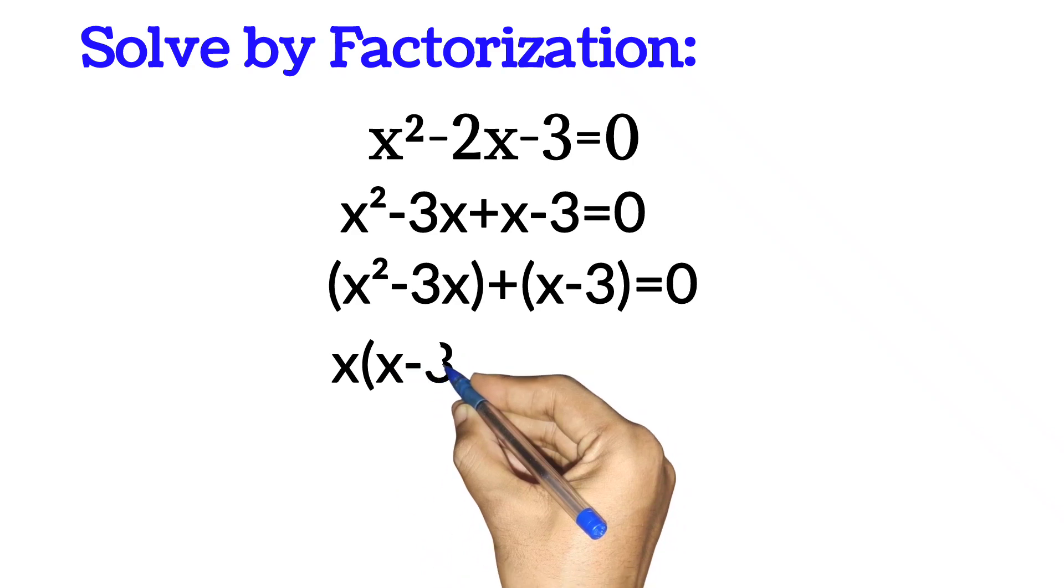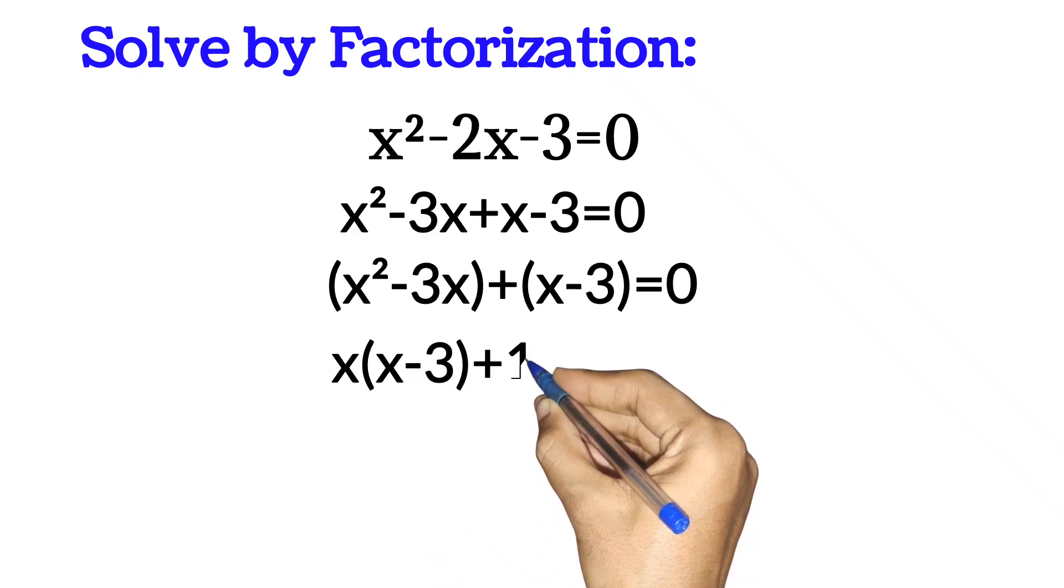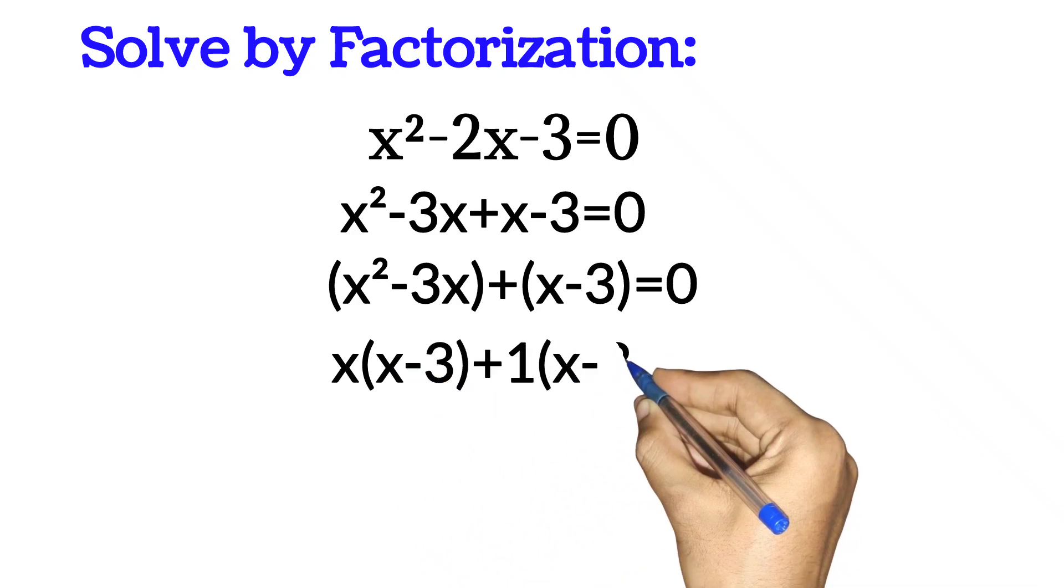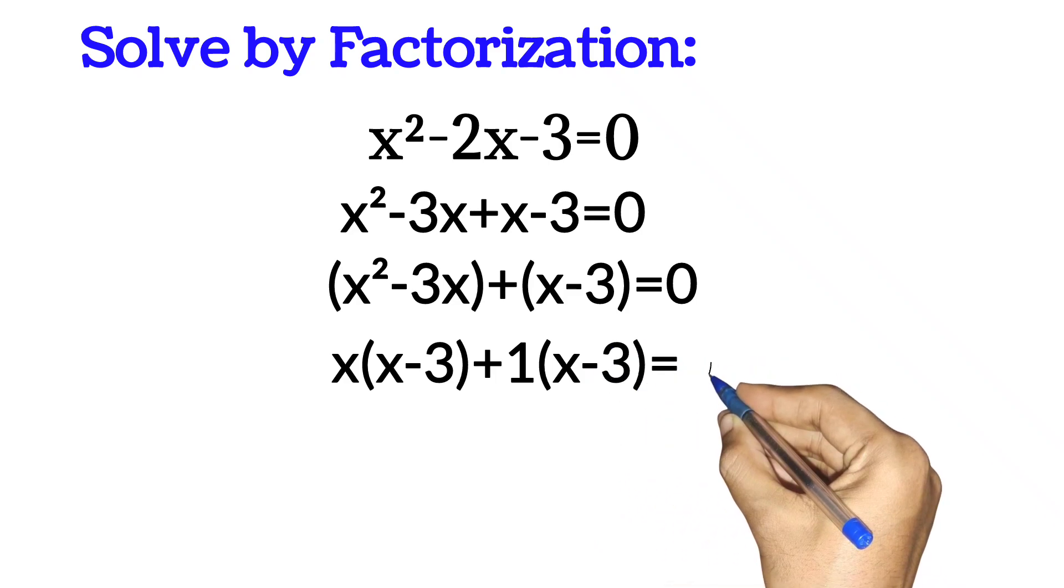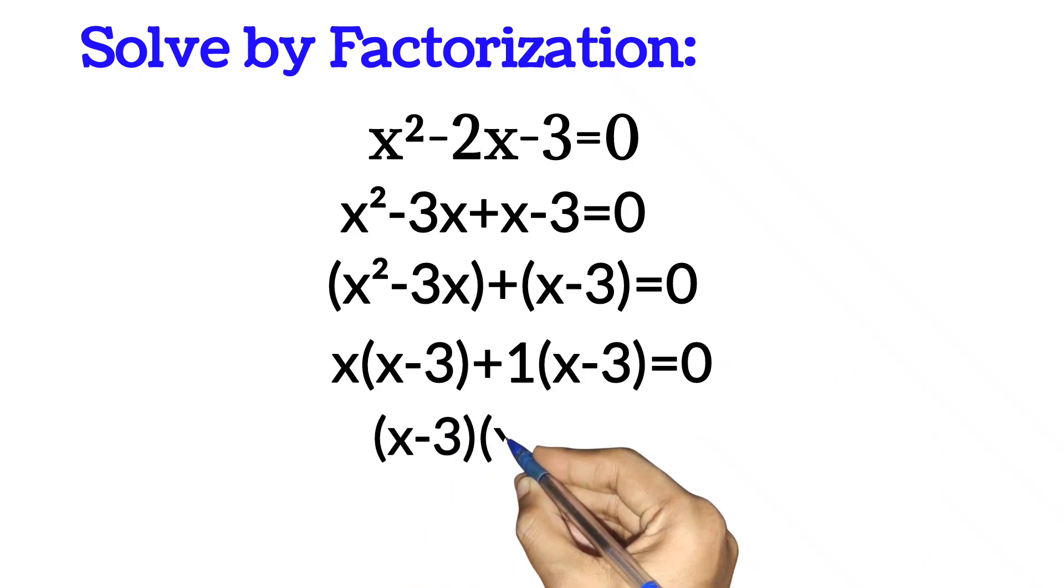Then you factorize x out. The second one, 1 is common, factorize 1 out. From here, the two brackets are the same. Then you pick one and group (x - 3)(x + 1) together equal to zero.